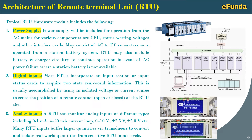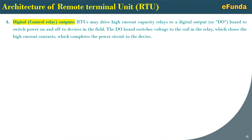Third, analog inputs. An RTU can monitor analog inputs of different types including 0 to 1 milliamp, 4 to 20 milliamp current loop, 0 to 10 volt, plus/minus 2.5 volt, plus/minus 5 volt, etc. Many RTU inputs buffer larger quantities via transducers to convert and isolate real-world quantities from sensitive RTU input levels.